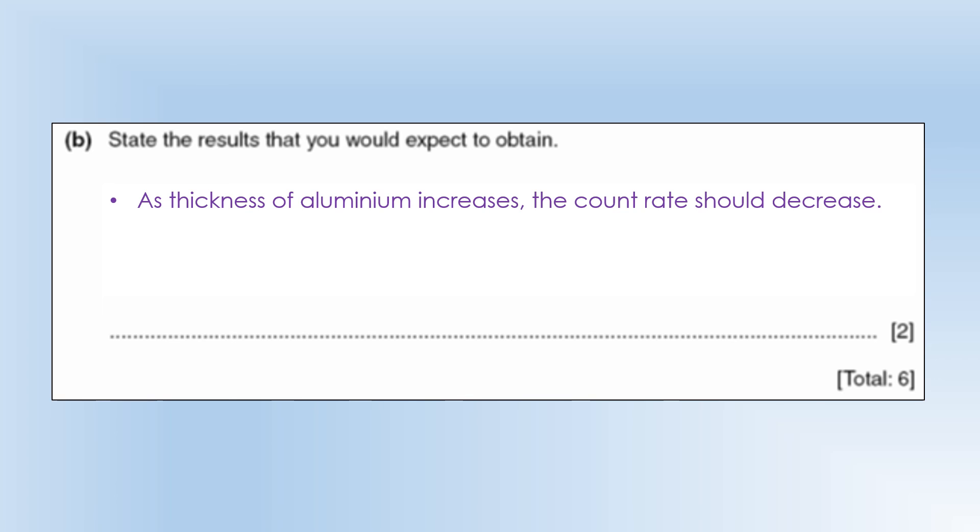State the results you'd expect to obtain. Well, as the thickness of aluminium increases, the count rate should decrease. As the thicker it is, the more it's going to absorb the radiation. And after about 10 sheets, we'd expect the count rate to drop to zero once we have accounted for the background count rate, because that's about the limit to which beta radiation can travel in aluminium, about 5 centimeters max.